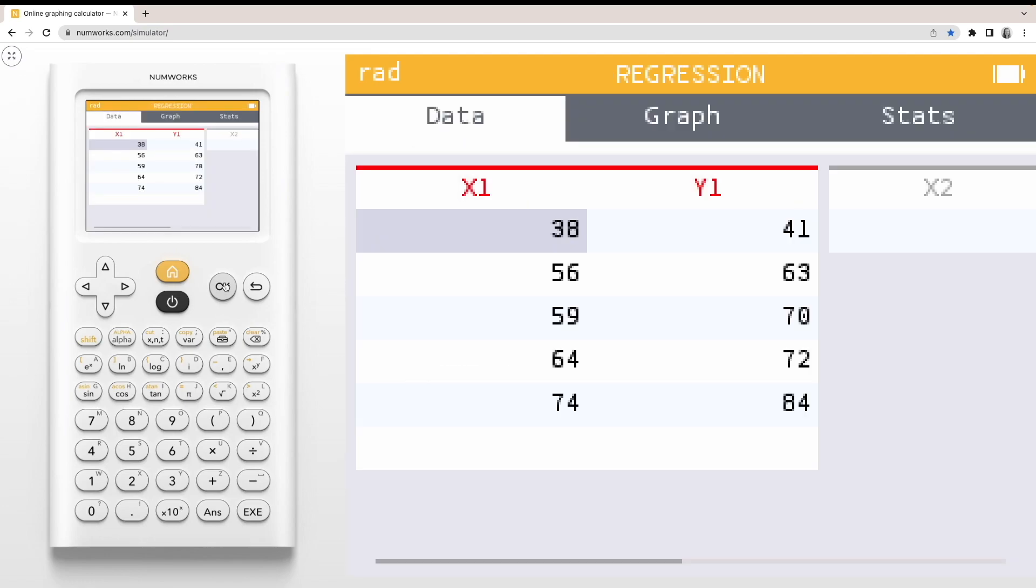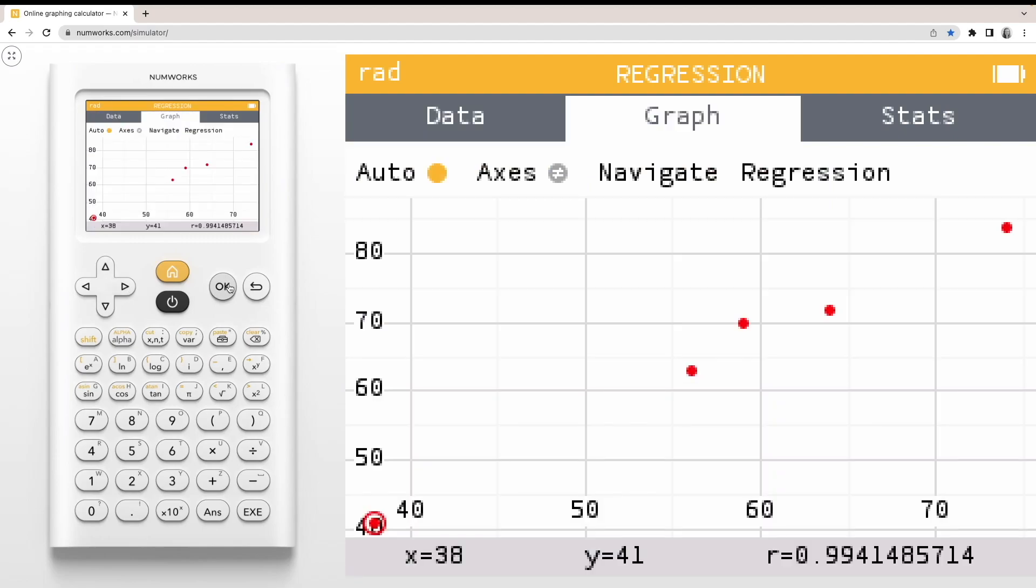You'll notice that I already have one data set entered into my Data tab. Navigate to the Graph tab. By default, only a scatter plot will be displayed.